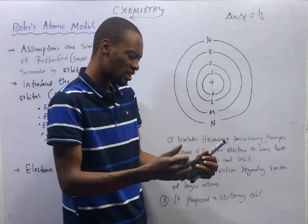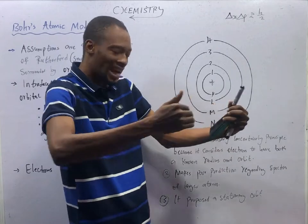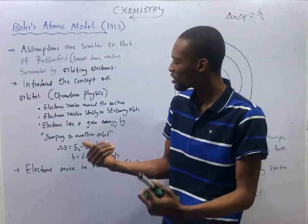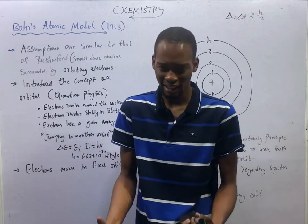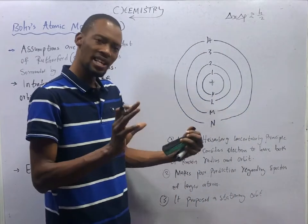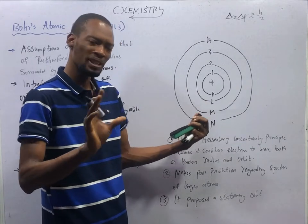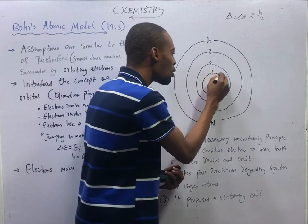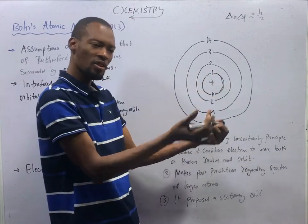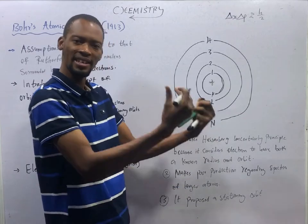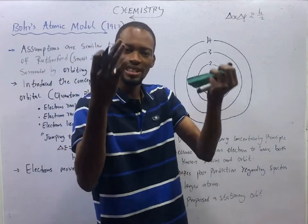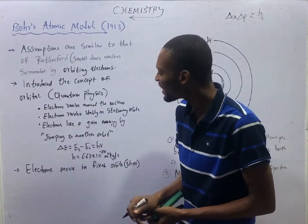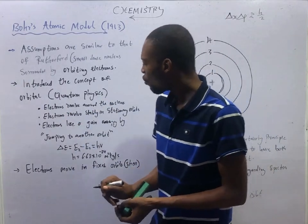He said every electron has their orbit where they are allowed to move. An orbital is a region in the nucleus where there is a possibility of finding an electron. So according to him, each electron is in a stationary orbit. They have their own orbit, and when these electrons are moving in their orbit they don't emit or gain energy. They don't lose or gain energy, they don't absorb or release energy so long they are moving in their allowed orbit.